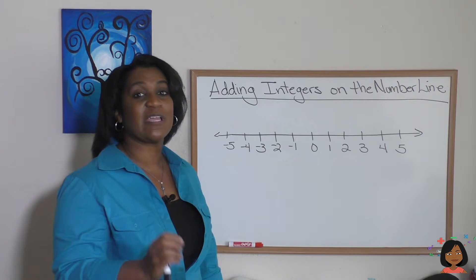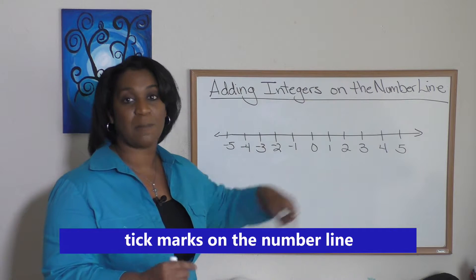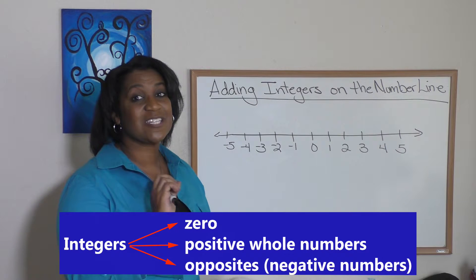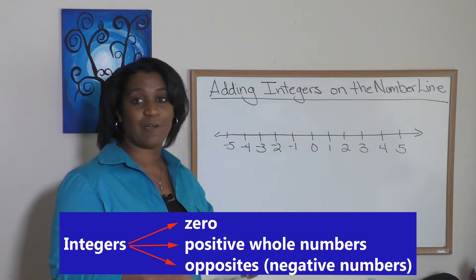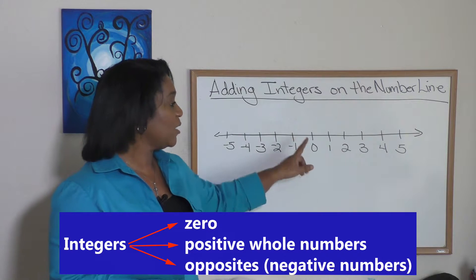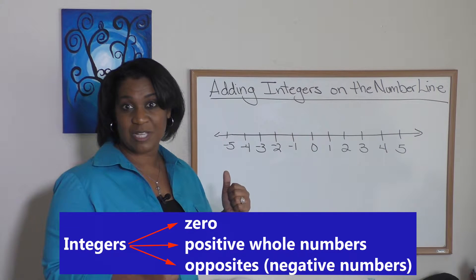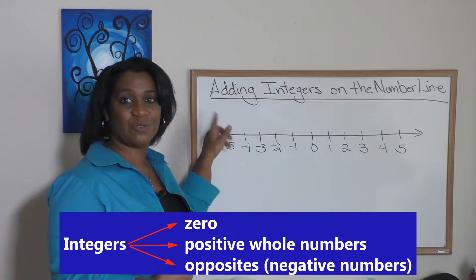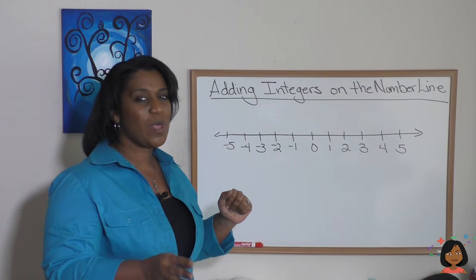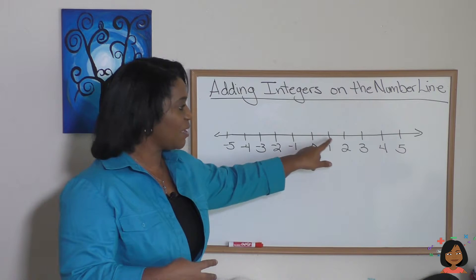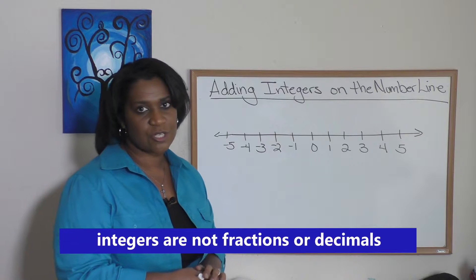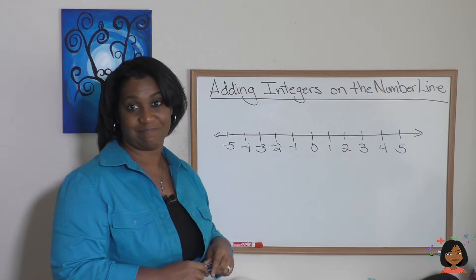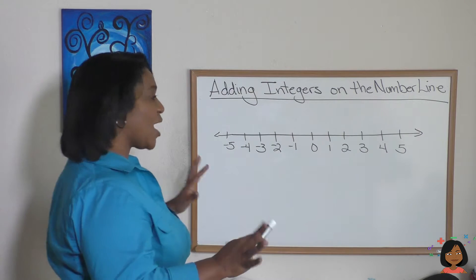Remember, integers are the tick marks on the number line. Zero is an integer, all of the positive whole numbers — anything to the right of zero — like one, two, three, four, five, those are integers. And also their opposites, the negative numbers: negative one, negative two, negative three. What about fractions and decimals — the numbers in between the tick marks? Nope, they're not integers. It's just the tick marks on the number line.